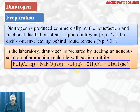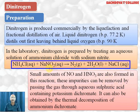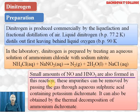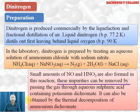The reaction of ammonium chloride and NaNO₂ gives nitrogen plus 2 water plus NaCl. Ammonium nitrite on heating will also give nitrogen plus 2 water. Small amounts of NO and HNO₃ are also formed in the reaction as impurities.